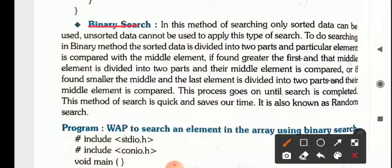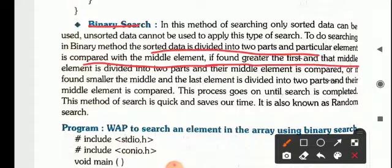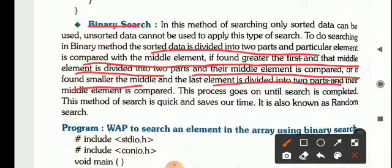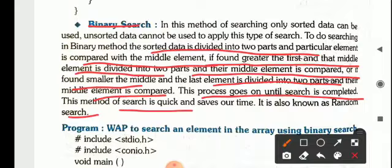Next we have binary search. Linear search or sequential search works on any type of data, whether it is sorted or unsorted. But binary search will work only on sorted data — it should be arranged either in ascending or descending order, because binary search always searches the data from the middle point. The sorted data is divided into two parts and compared with the middle element. If found greater, that half is divided again and the middle element is compared again, and so on. This method of search is quick and saves time. It is also known as random search — just as sequential search is also known as linear search. It is the quickest method.